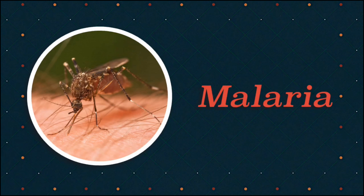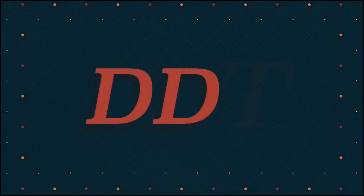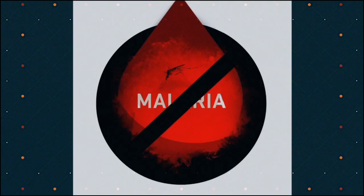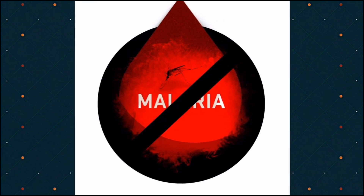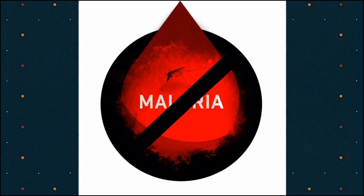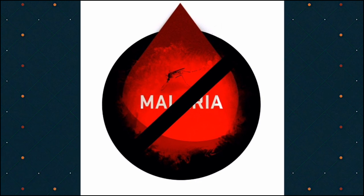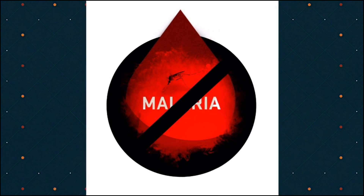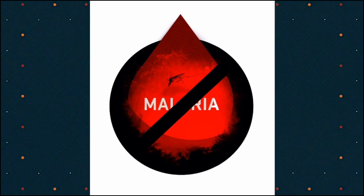This is especially important because pests like mosquitoes can transfer diseases like malaria, which kill millions of people worldwide every year. One such chemical that helps to control mosquitoes and insects is called DDT. DDT was used predominantly in the 1950s and 60s and was very successful in stamping out malaria and other infectious diseases transmitted by pests.